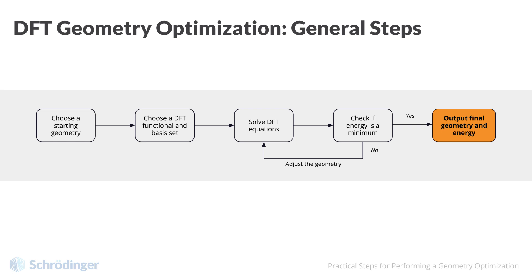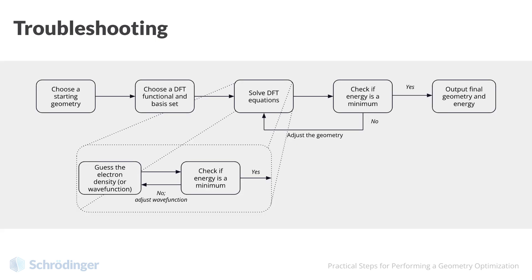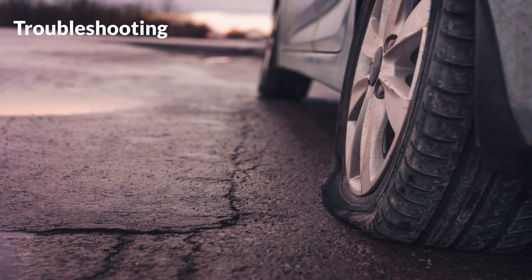As we have seen, geometry optimization is a complicated procedure which consists of two types of iterative processes. While we could present an entire series of videos on troubleshooting problematic calculations, for the new user, it is only practically important to be familiar with the most common pitfalls. We can think of this like our familiarity with car maintenance. It is good to be able to change a tire, but for most of us, beyond that, we would recommend calling for roadside assistance.